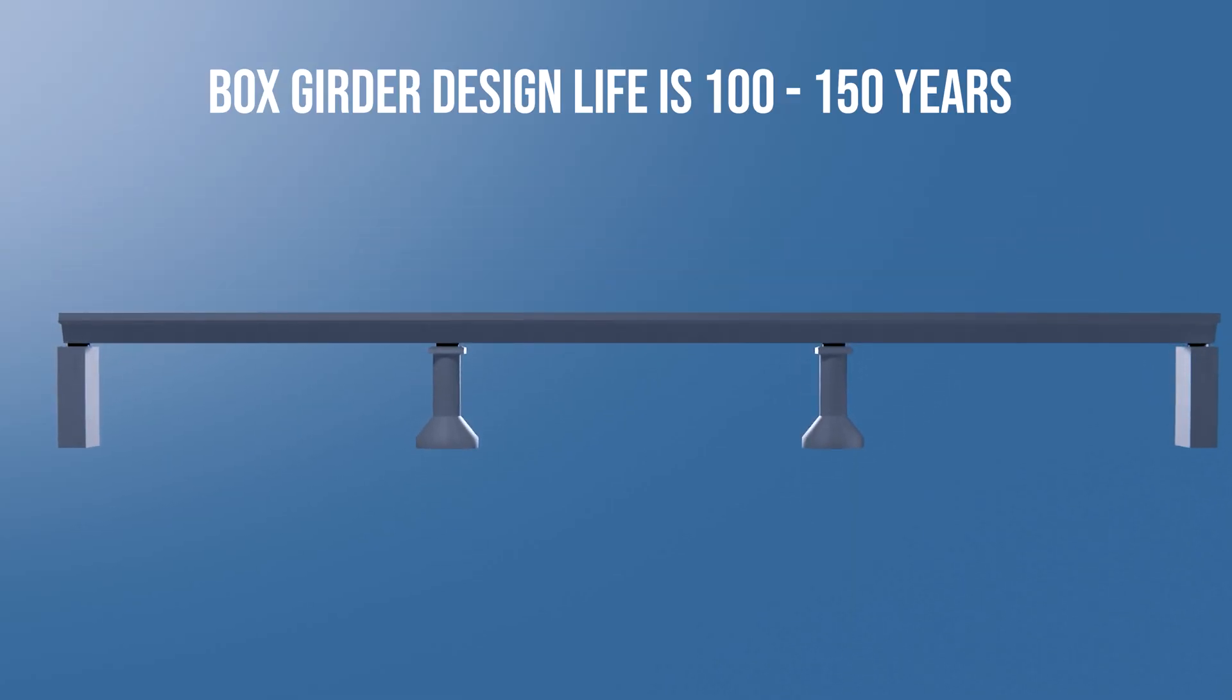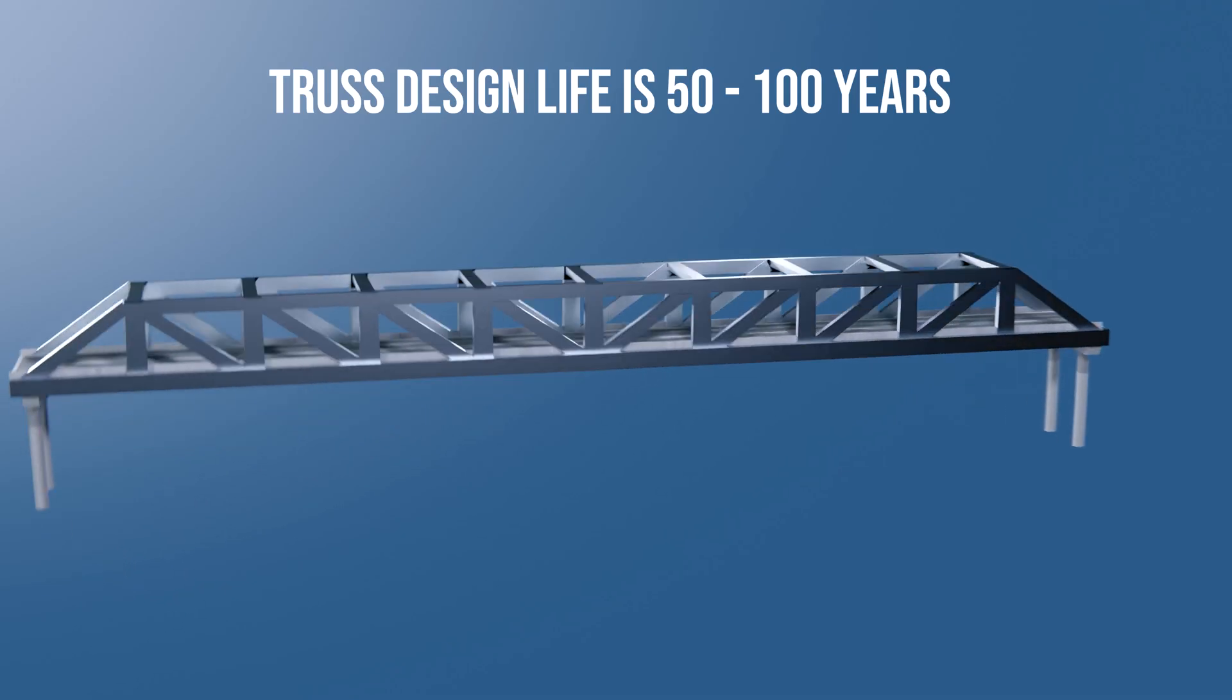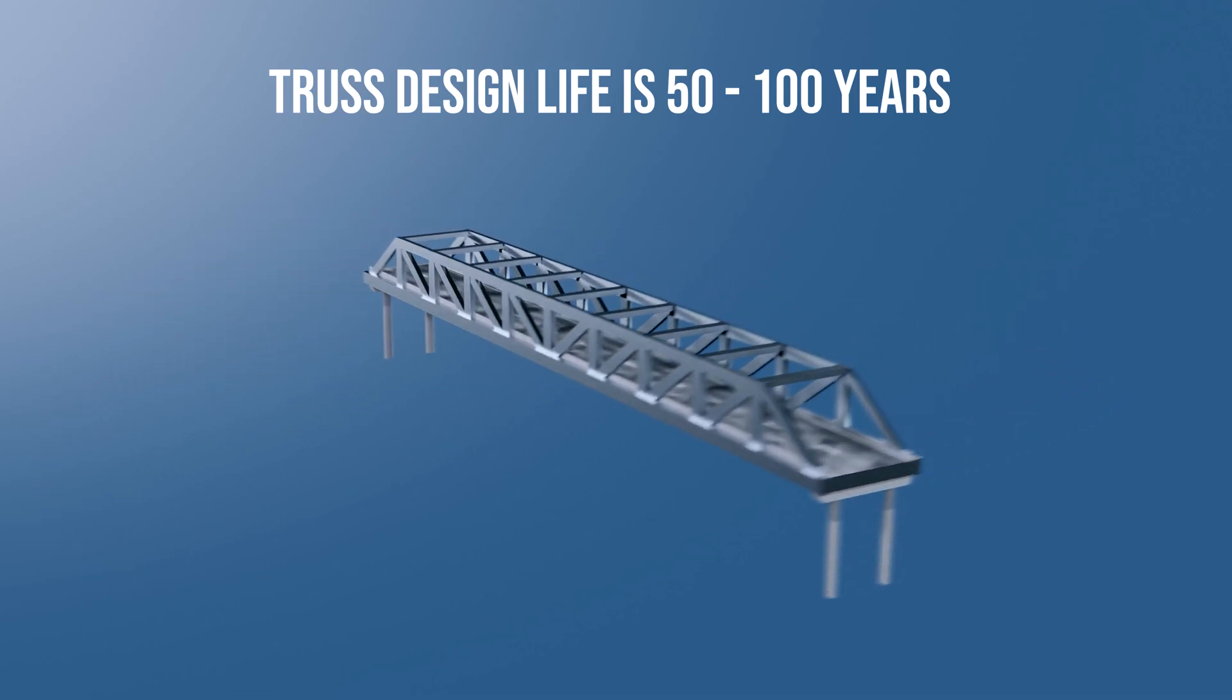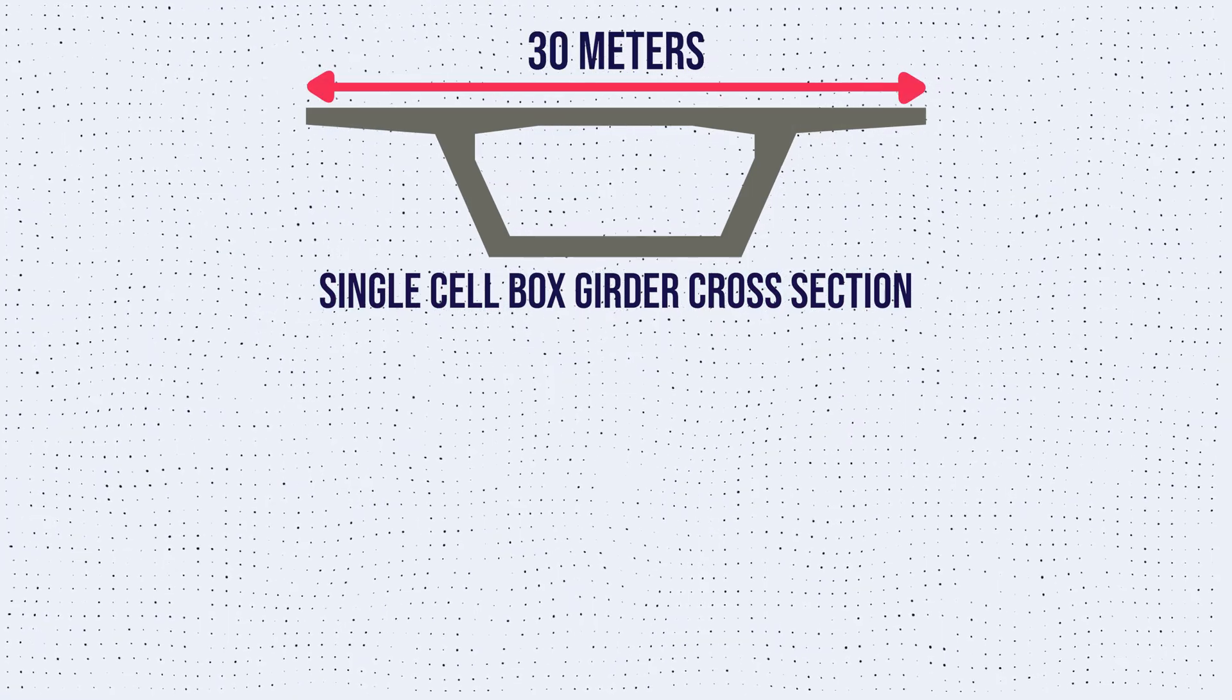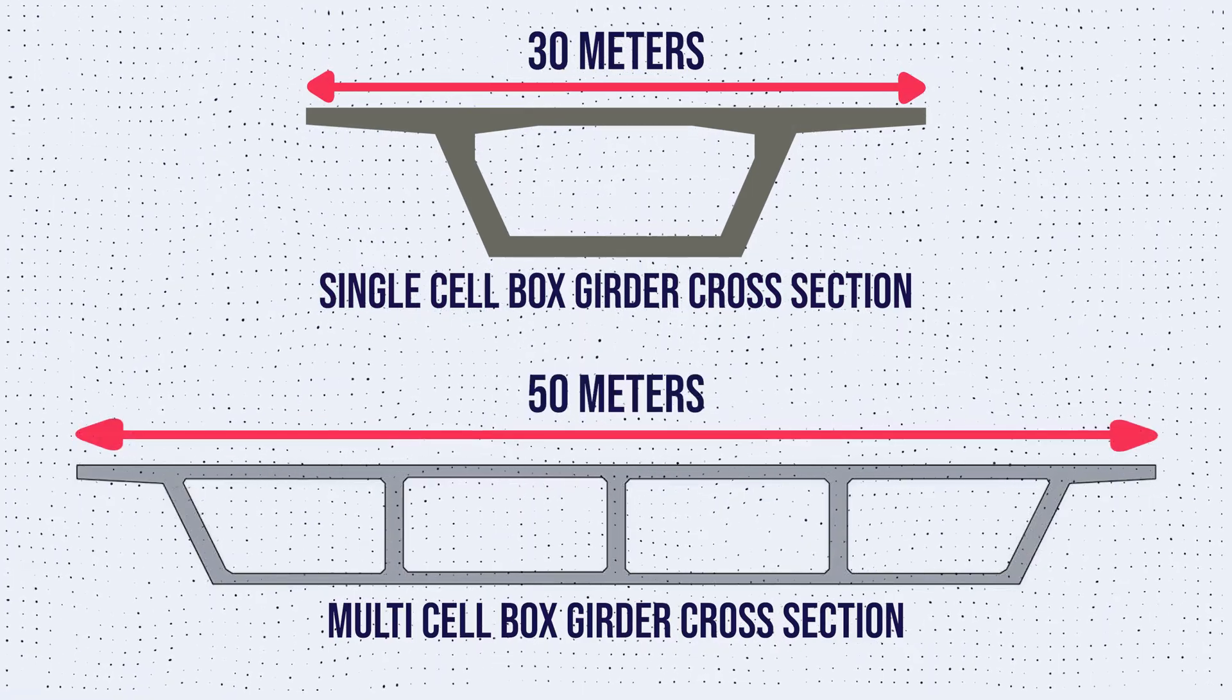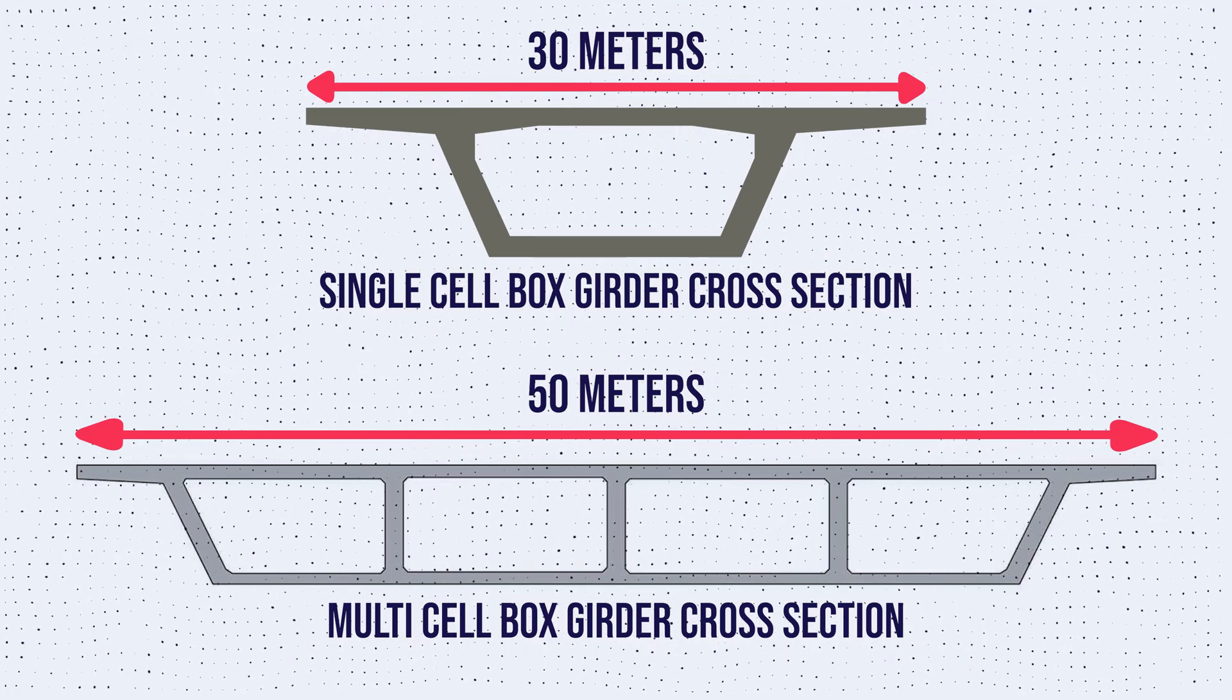Box girder bridges have a minimum design life of 100 to 150 years, which is way more than truss bridges, which usually have a design life of 100 years. Single box girders may carry decks up to 30 meters and even up to 50 meters for major roads, which can be very cost effective.